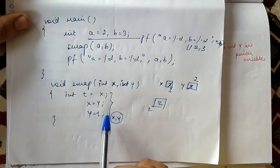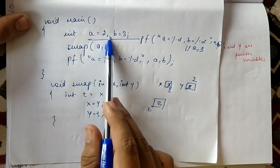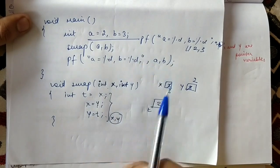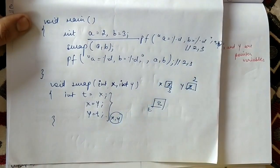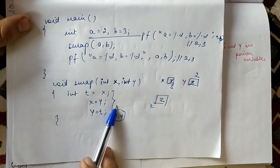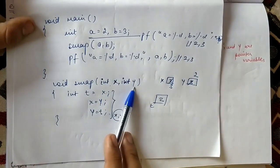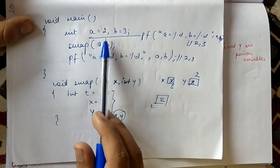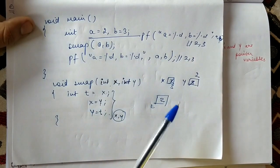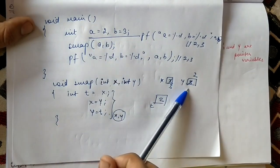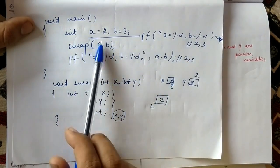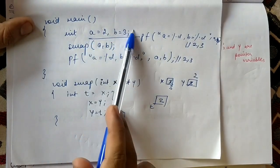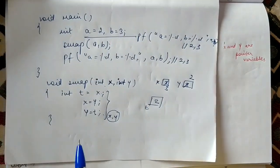But after completing that function, when we print the value of a and b, the output will still be two comma three. This is because the changes are made only in the local arguments x and y — the actual values of a and b are not changed. The values of a and b are copied into x and y, not their addresses. If we pass the address, the changes will be made in the actual variables — and this is achieved using pointers.